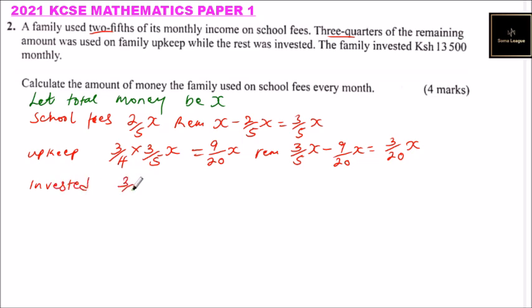That is 3 over 5 of X and whatever was invested is equivalent to 13,500. So we can get X. So X equals 13,500, you multiply by 5 and you divide by 3, and using your calculator you get that totals to 90,000.